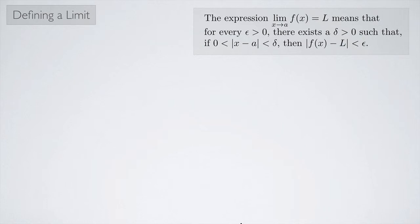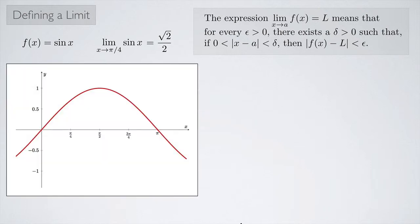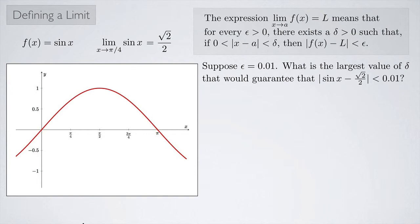Let's look at one more example. Suppose f(x) = sin(x) and we want the limit as x approaches π/4 of sin(x), which equals √2/2. Here's a graph of sin(x). At x = π/4, tracing up and over gives √2/2 on the y-axis. Now suppose epsilon is 0.01 — what is the largest delta guaranteeing |sin(x) − √2/2| < 0.01?